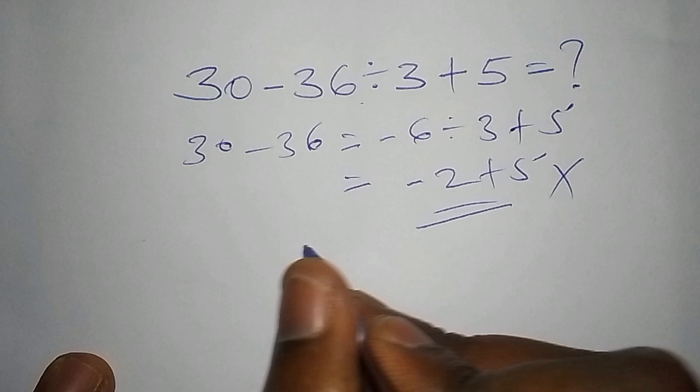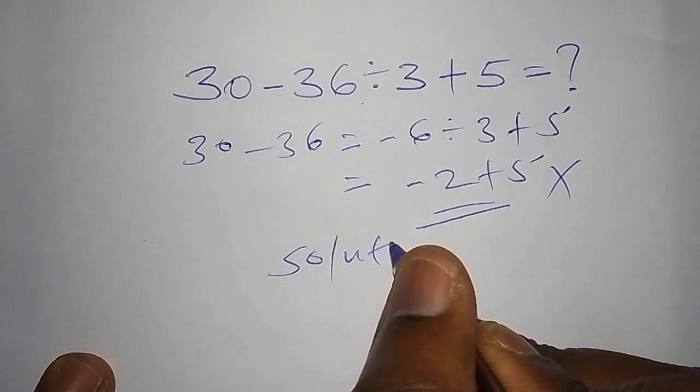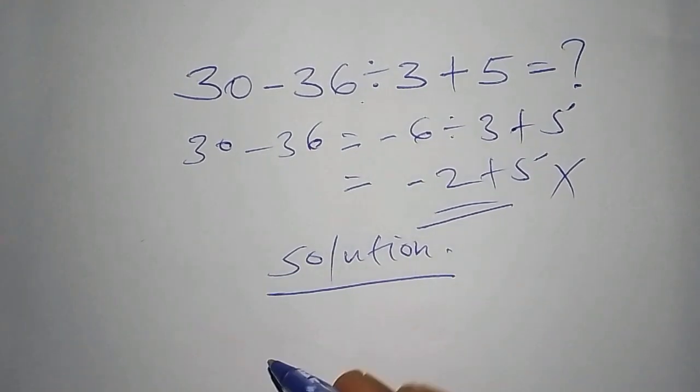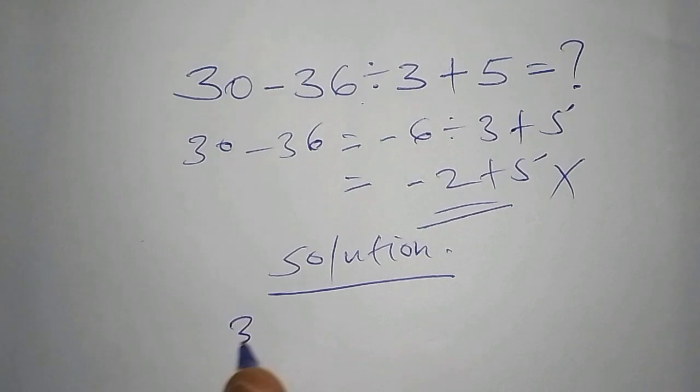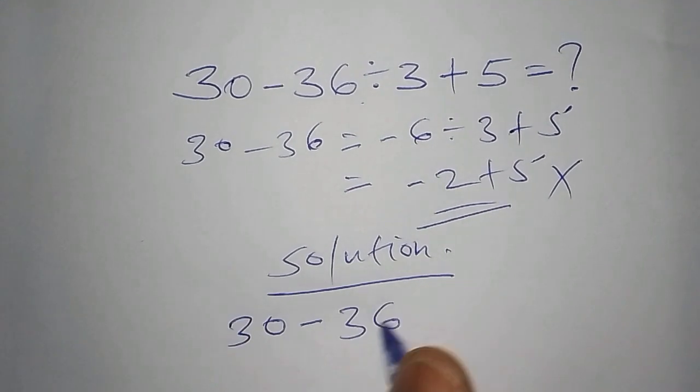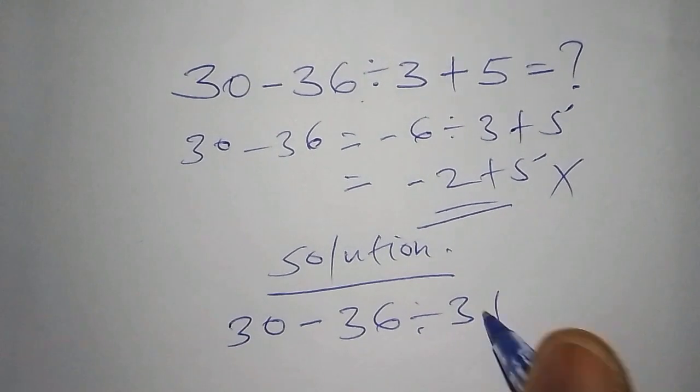Come with me so that I show you. So let's begin. We have the solution to this math problem. So under the solution, we have 30, subtract from 36, divide by 3, add to 5.